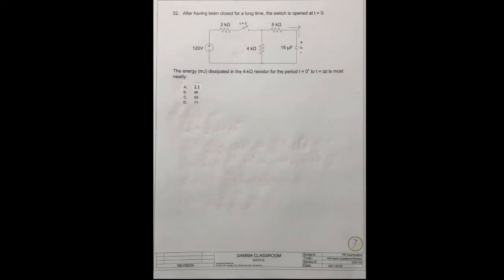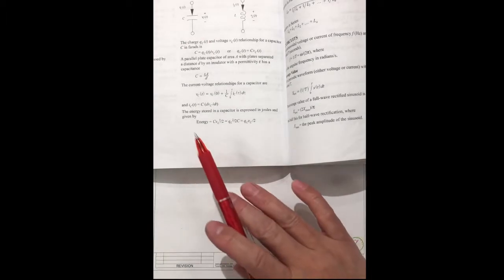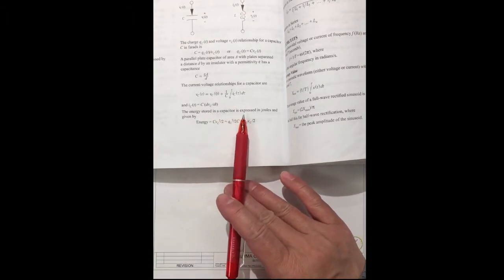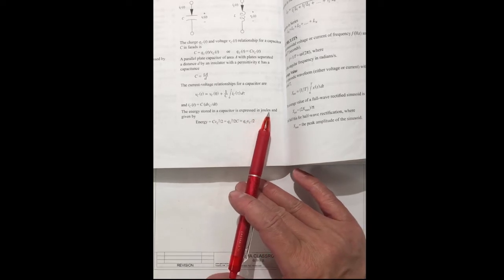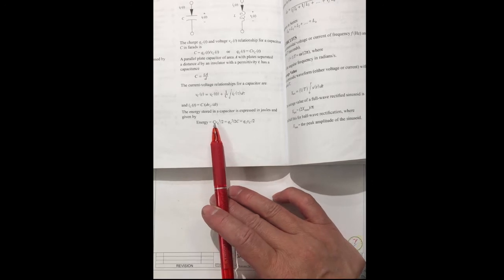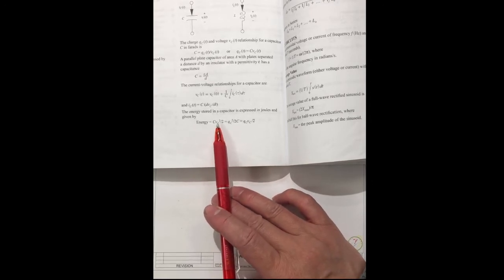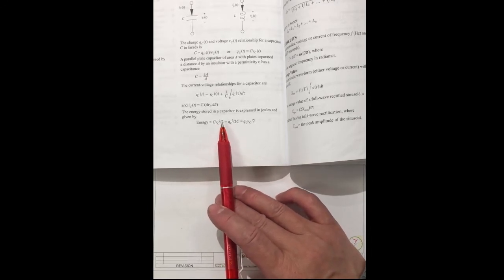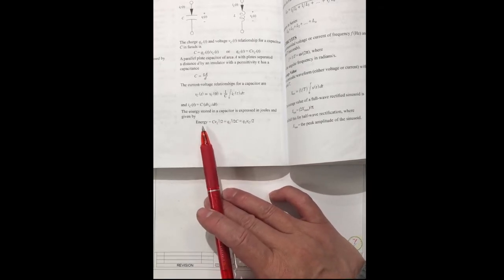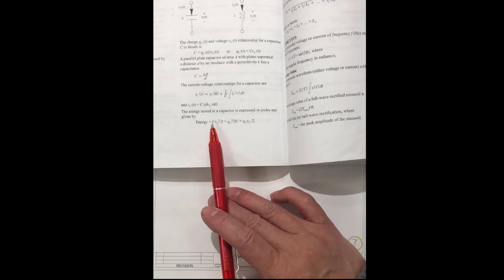We can find the formula in the FE handbook on page 194. The energy stored in a capacitor is expressed in Joules and given by: energy equals C times Vc squared divided by 2. If we can find Vc, we can find the energy in the capacitor.